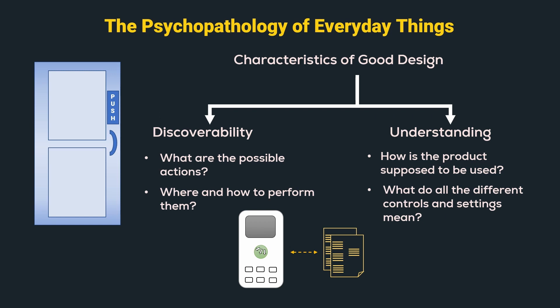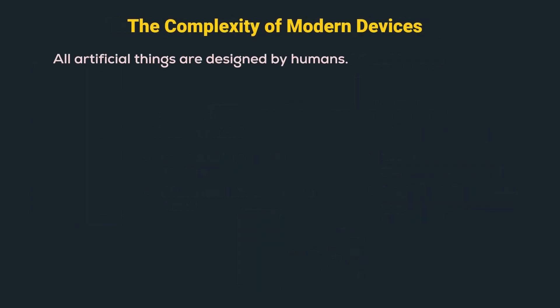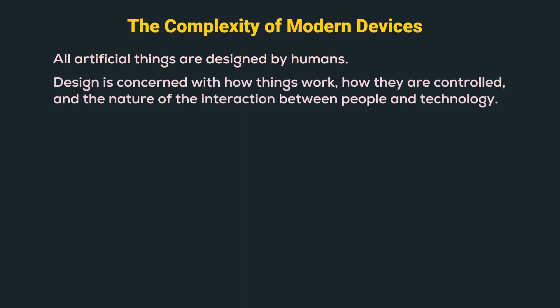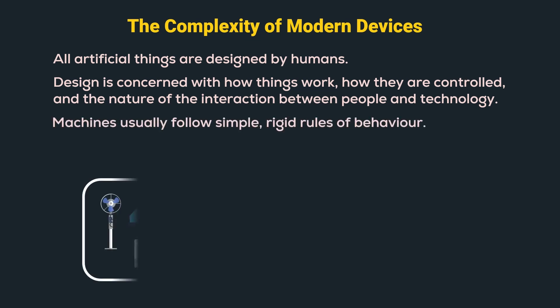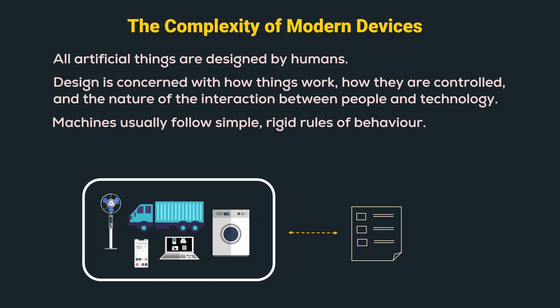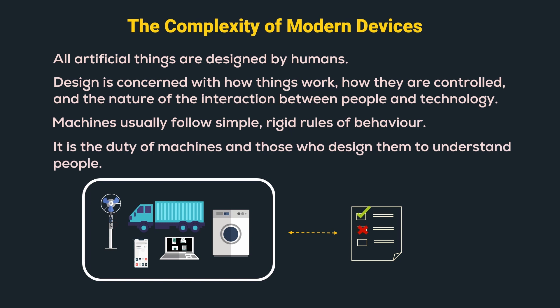Let us understand the complexity of modern devices. All artificial things are designed by humans. Design is concerned with how things work, how they are controlled, and the nature of the interaction between people and technology. Machines usually follow simple but rigid rules of behavior, and if humans get those rules right, the machines perform as expected, resulting in a pleasurable human-machine interaction. However, poorly designed machines lack discoverability and understandability. Therefore, humans fail to understand these rules and do not perform them, resulting in undesirable results and frustration. Hence, it is the duty of the machines and those who design them to understand people and make them understand the rules of the machine. That's when human-centered design comes into picture.